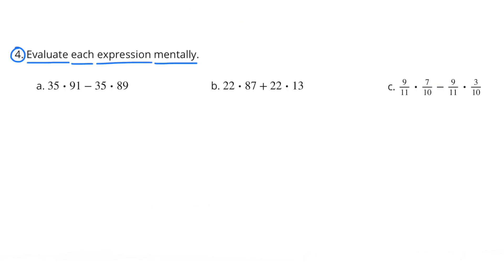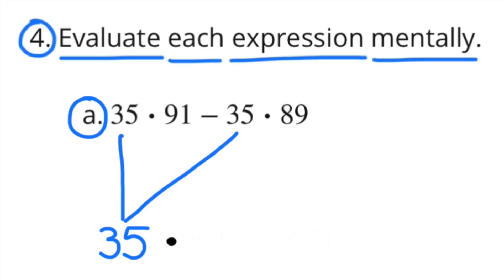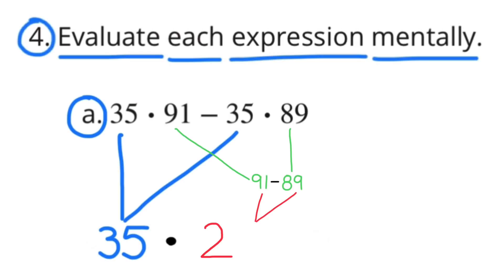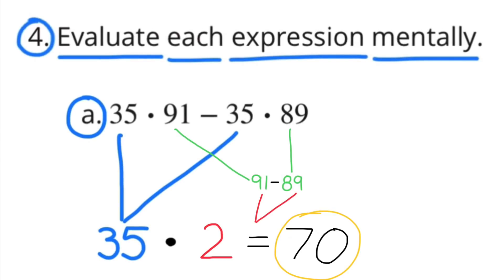Number 4: Evaluate each expression mentally. Part A: 35 times 91 minus 35 times 89. That would be the same as 35 times (91 minus 89). 91 minus 89 is 2, and 35 times 2 equals 70. We were able to evaluate this mentally because 35 times 2 is an easy multiplication problem and 91 minus 89 is an easy subtraction problem.